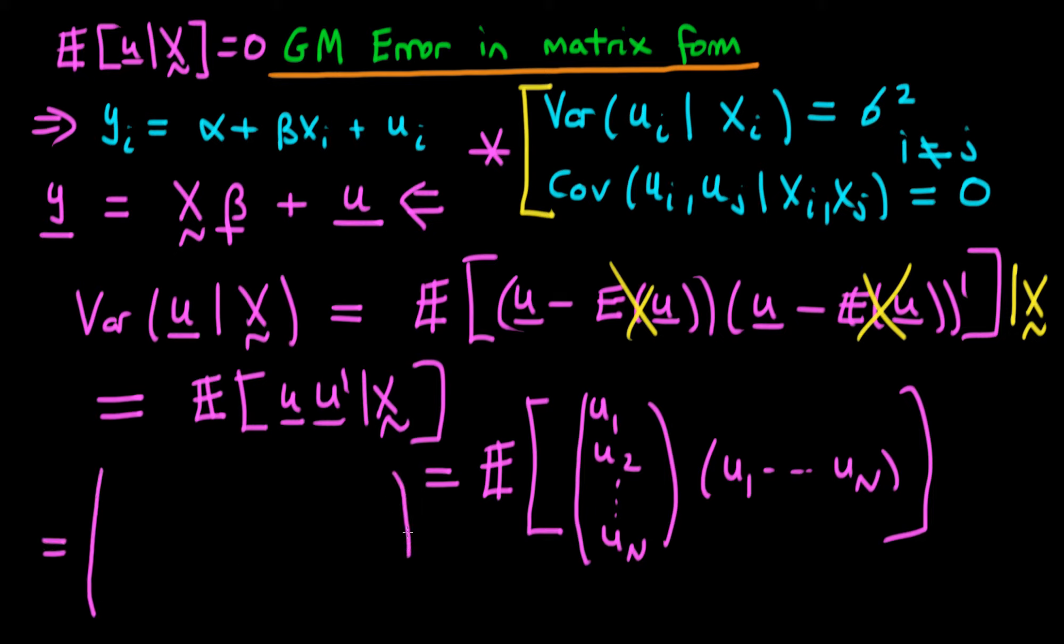Going through it in turn, the first term is u1 times u1. So the first term in our matrix with an expectation on the outside is u1². The second term is u1 times u2. The last term in our first row is u1 times un. That's our first row.